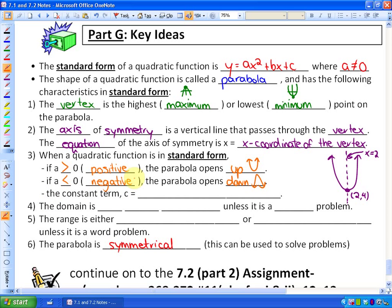The constant term c, so the value c, the constant, is always equal to the y-intercept. And if it doesn't exist, then the y-intercept is 0.